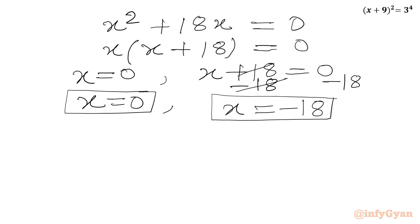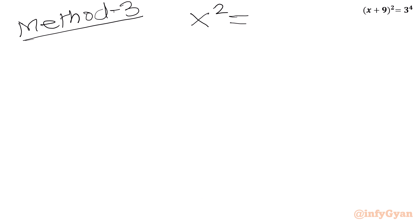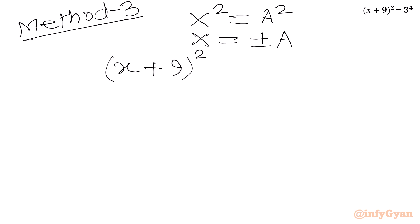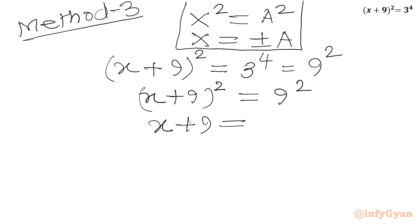Now Method Number 3. In this method we will use one algebraic result directly: if x² = a², then x = ±a. So I will write our equation (x + 9)² = 3⁴, which we can write as 9², giving us (x + 9)² = 9². Now we will take the square root of both sides and write x + 9 = ±9.